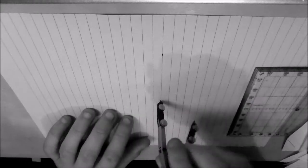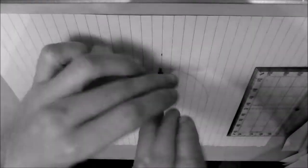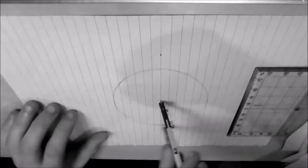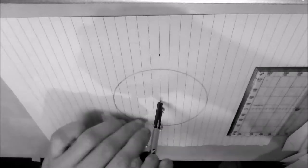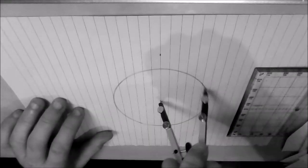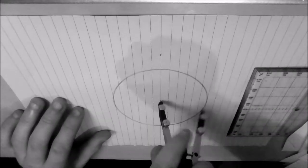And then take your compass, put it on the center dot, and just draw a circle around that point. Try and make it a bit darker so you guys can see it.